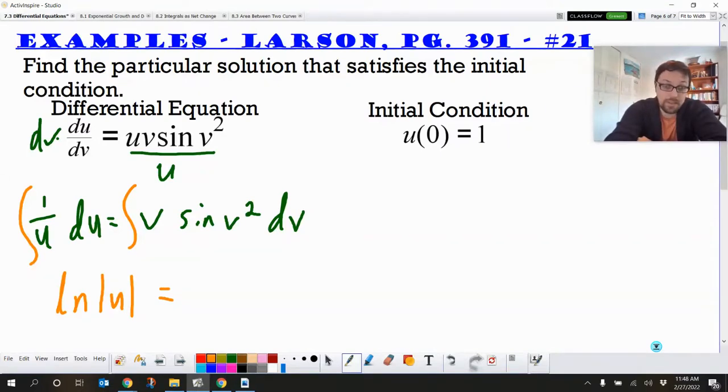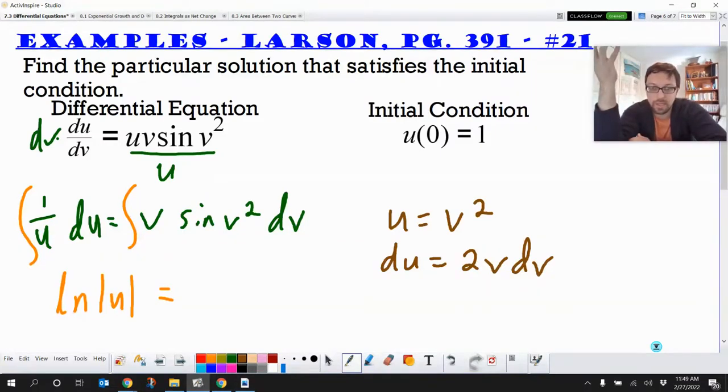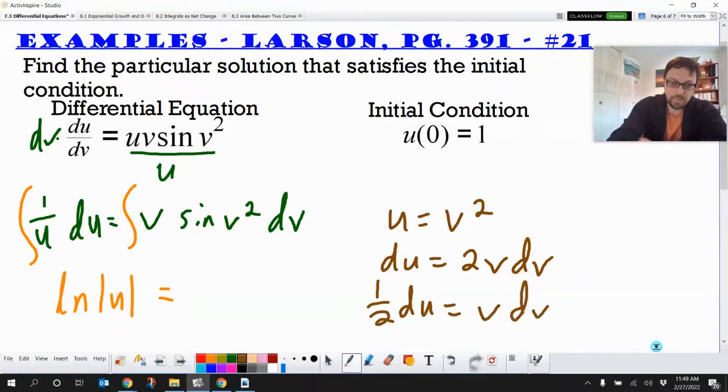Then on the right-hand side, we've got sine of v squared dv. So we need to do a u substitution in order to integrate that. So that u is going to be v squared. And then du is going to be 2v dv. So if we kind of do that substitution in our head and then substitute things back, we know we're going to get an extra one-half in front of our thing, because we've got one-half du equals v dv.